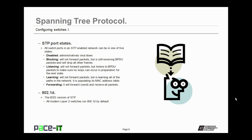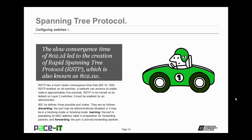The IEEE liked STP so much that it created the 802.1d standard, their version of STP. All modern layer 2 switches run the 802.1d standard by default. The slow convergence time of 802.1d led to the creation of Rapid Spanning Tree Protocol, or RSTP, also known as the IEEE 802.1w standard. RSTP has a much faster convergence time — with RSTP enabled on all switches, a network can achieve its stable state in approximately 5 seconds, compared to up to 50 seconds with 802.1d.